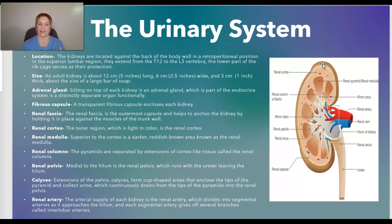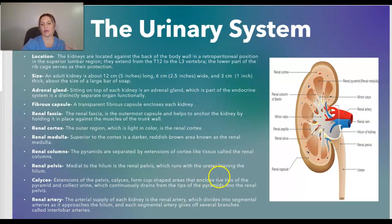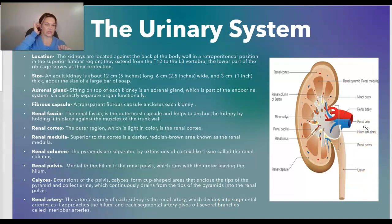The calyces are extensions of the pelvis that form cup-shaped areas enclosing the tips of the pyramids and collect urine. These calyces continually drain from the tips of the pyramids into the renal pelvis. The renal artery is the arterial supply to each kidney — one on the right and one on the left — which divides into segmental arteries as it approaches the hilum.